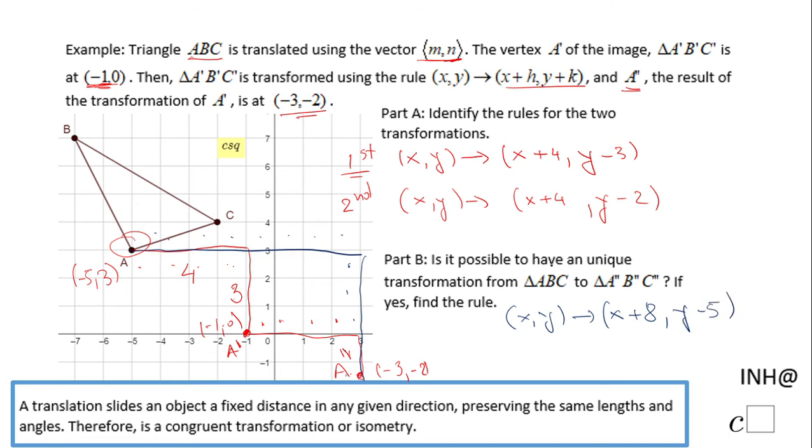Of course you can get this rule by looking at these two rules: 4 plus 4 is 8, and -3 plus -2, or -3 minus 2, is going to give you -5. So it can be done algebraically also.